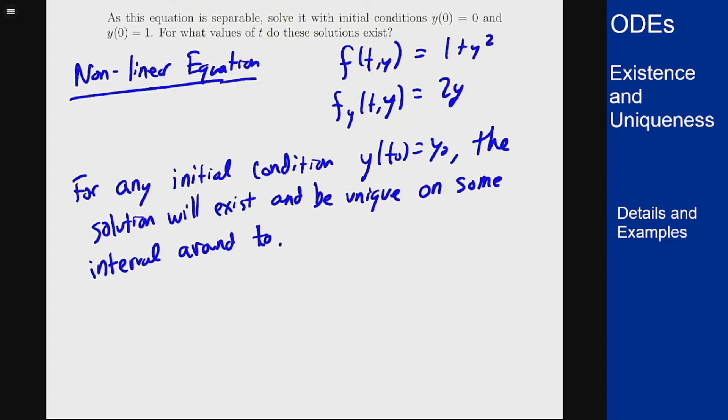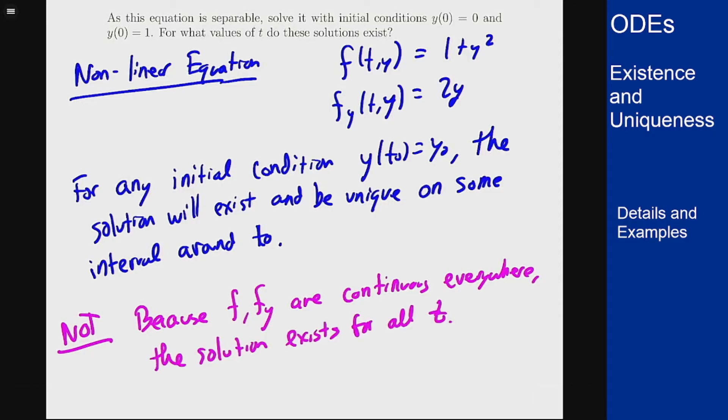Let me write that statement here and then we'll show why it is incorrect. This is NOT because f and fy are continuous everywhere, the solution exists for all values of t, or the solution for any initial condition exists on (-∞, ∞), which is what the linear theorem would say in this circumstance. If both functions are continuous everywhere then the solution will exist everywhere. That's what the linear theorem says, but it's not what the nonlinear theorem says.